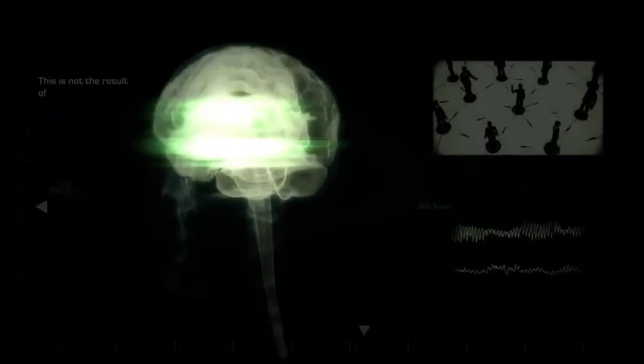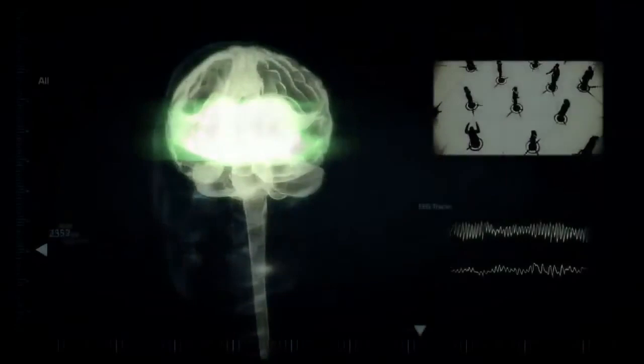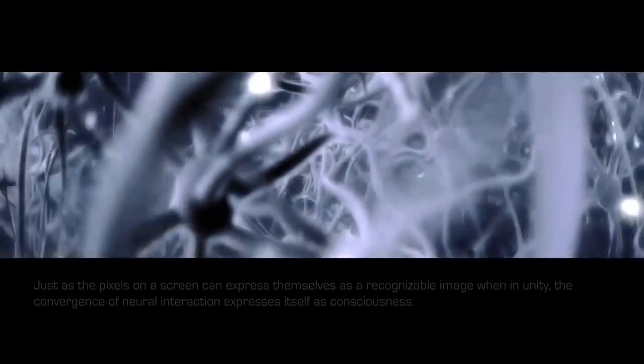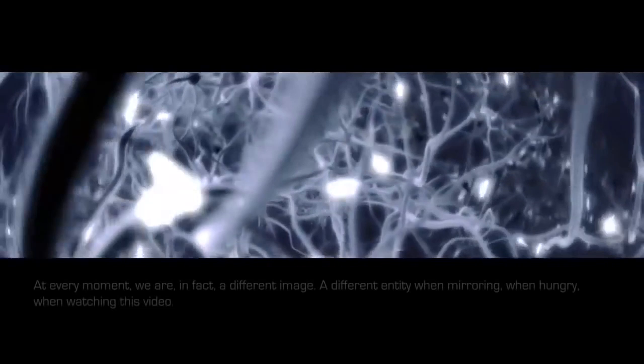This is not the result of some core self giving commands to different cerebral areas. All the different parts of the brain become active and inactive and interact without a core. Just as the pixels on a screen can express themselves as a recognizable image when in unity, the convergence of neural interaction expresses itself as consciousness. At every moment, we are in fact a different image, a different entity when mirroring, when hungry, when watching this video. Every second, we become different persons as we go through different states.